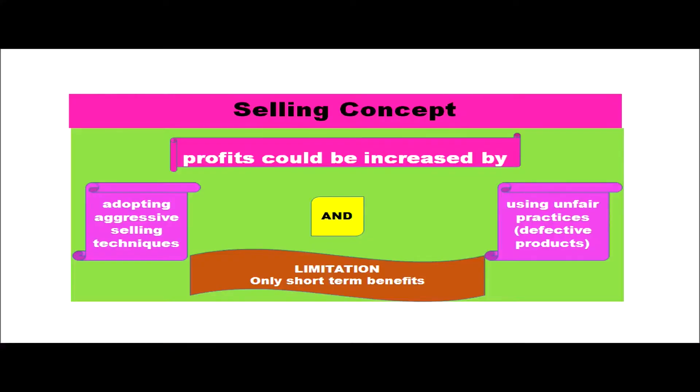The next philosophy is the selling concept, where it is believed that profits could be increased by adopting aggressive selling techniques and sometimes using unfair practices — for example, defective products are given to consumers. Whatever goods have been produced are pushed to consumers through aggressive selling techniques. The limitation of this selling concept is that only short-term benefits can be reaped, because once people realize the quality is not good or they feel cheated, they will not buy again and will tell others not to buy either.